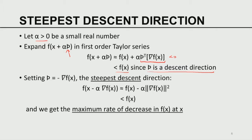Our aim is to maximize the decrease — we are always greedy. Moving away from x by a small distance α, we look for the direction p where the decrease in f is maximum. The direction p that achieves maximum decrease is p = −∇f, the negative gradient. Moving along the negative gradient is the direction where f decreases at the maximum rate; this is called the steepest descent direction.